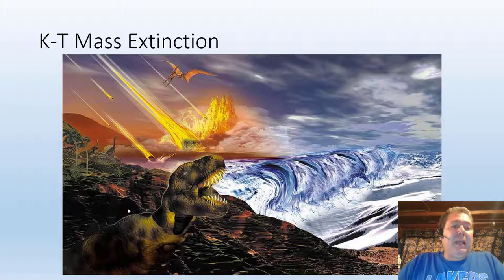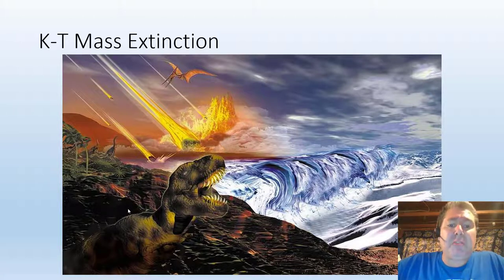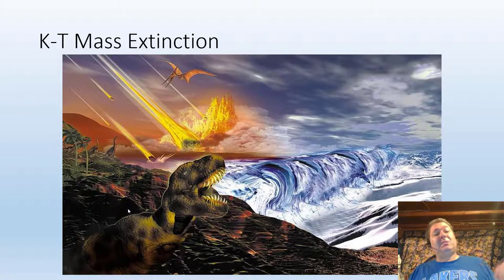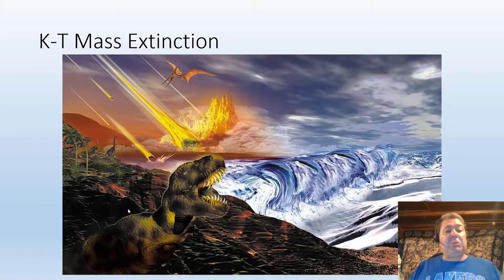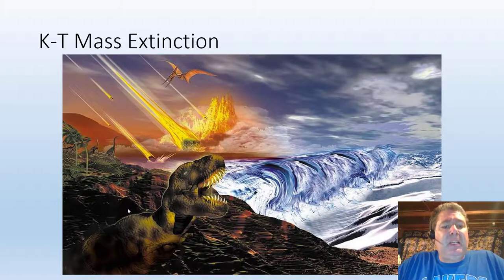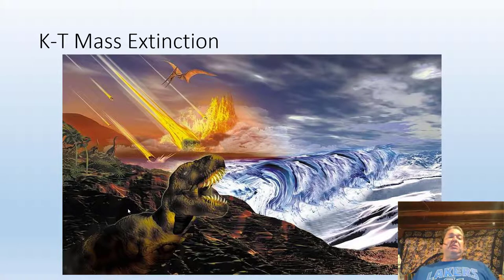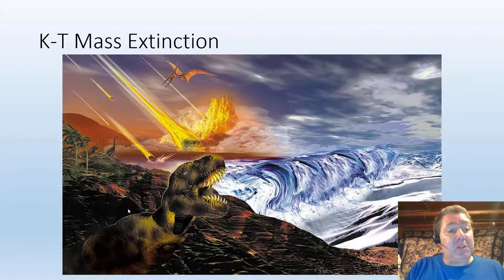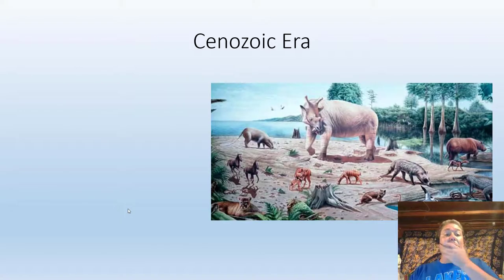The Mesozoic ends with another mass extinction — the second largest ever to hit our planet — called the KT or KPG mass extinction, marking the boundary between the Mesozoic and Cenozoic. Unlike the last mass extinction, this one was essentially instantaneous: our best guess is a six-mile-wide asteroid hitting the Yucatán Peninsula and causing worldwide catastrophe. Of course, some dinosaurs did survive — the birds, the avian dinosaurs.